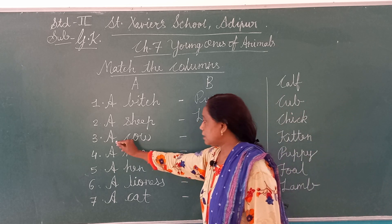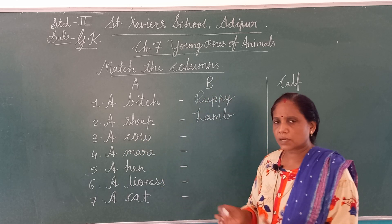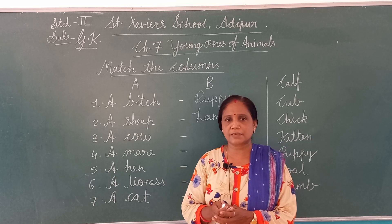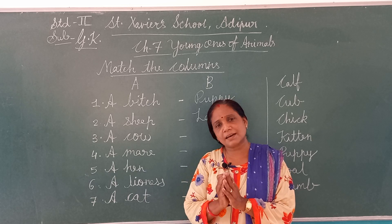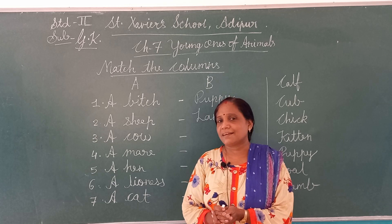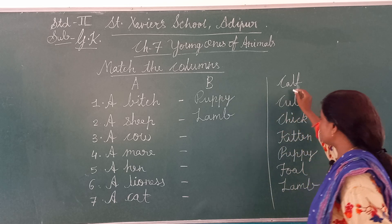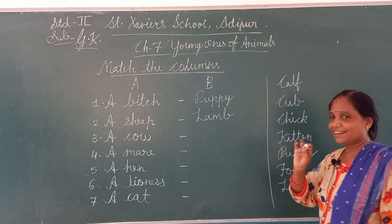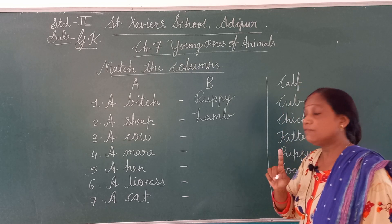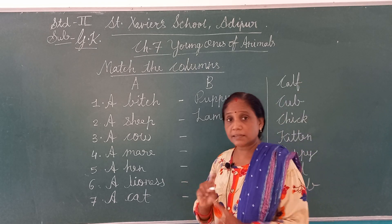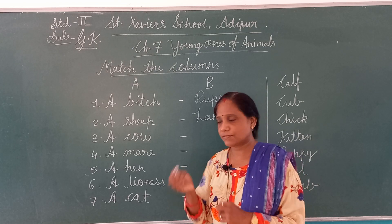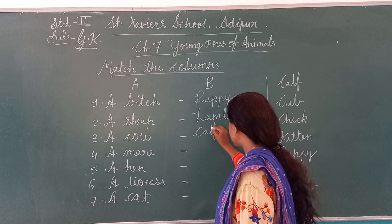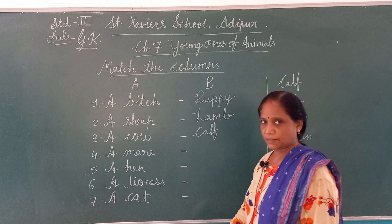Now number three — A, Cow. अभी Cow के बच्चे को क्या बोलेंगे? गाय आती है ना आपके घर के सामने। तो उसका जो छोटा-सा प्यारा बेबी होता है, उसको क्या बोलेंगे? वो C से start होता है — C-A-L-F, Calf. L will be silent, सिर्फ 'काफ' बोलेंगे। तो third number में लिखो: C-A-L-F.